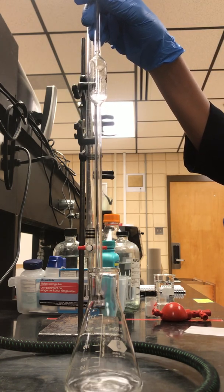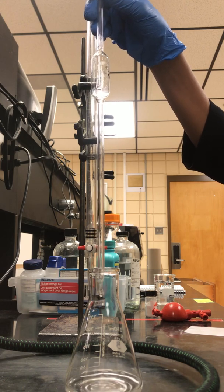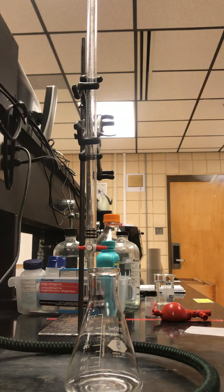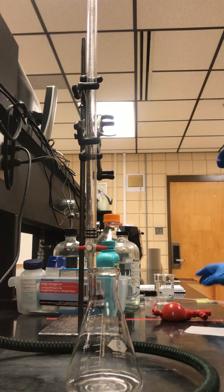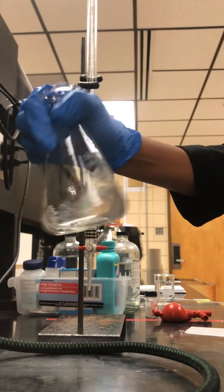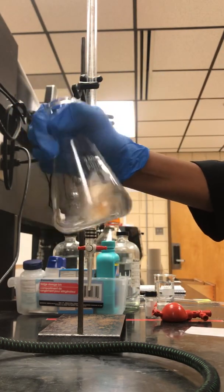Once it stops draining out, you have delivered your 25 milliliters into your flask. Afterwards, you're asked to swirl that flask so you can get your antacid to dissolve.